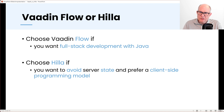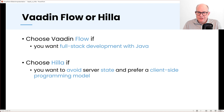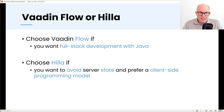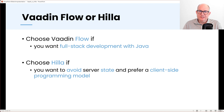So when should you choose Flow or Hilla? I would choose Vaadin Flow if you want to do full-stack development with Java — if your team are all Java developers and you don't want to care about TypeScript or JavaScript, and just want a Java UI component-based programming model. If you want to avoid server state, have a dynamic reactive frontend, and add more logic to the client, you should go with Hilla. Hilla is a great fit for self-contained systems: you'll end up with a single JAR or Docker image that contains both client and server. By the way, you can also mix Flow and Hilla.